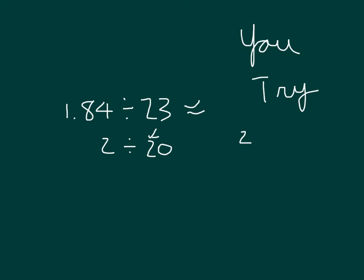2 divided by 20 is 2 divided by 2, that's our basic fact that helped us, divided by 10. Which is 1 divided by 10, which is equal to 1 tenth.